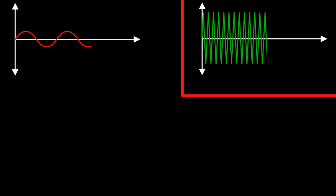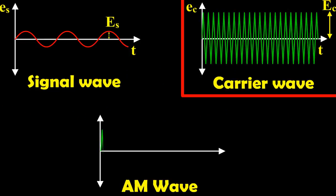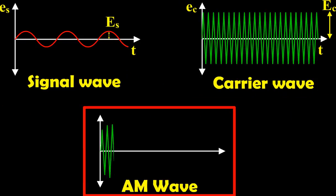When the amplitude of high frequency carrier wave is changed in accordance with the intensity of the signal, this process is called amplitude modulation.